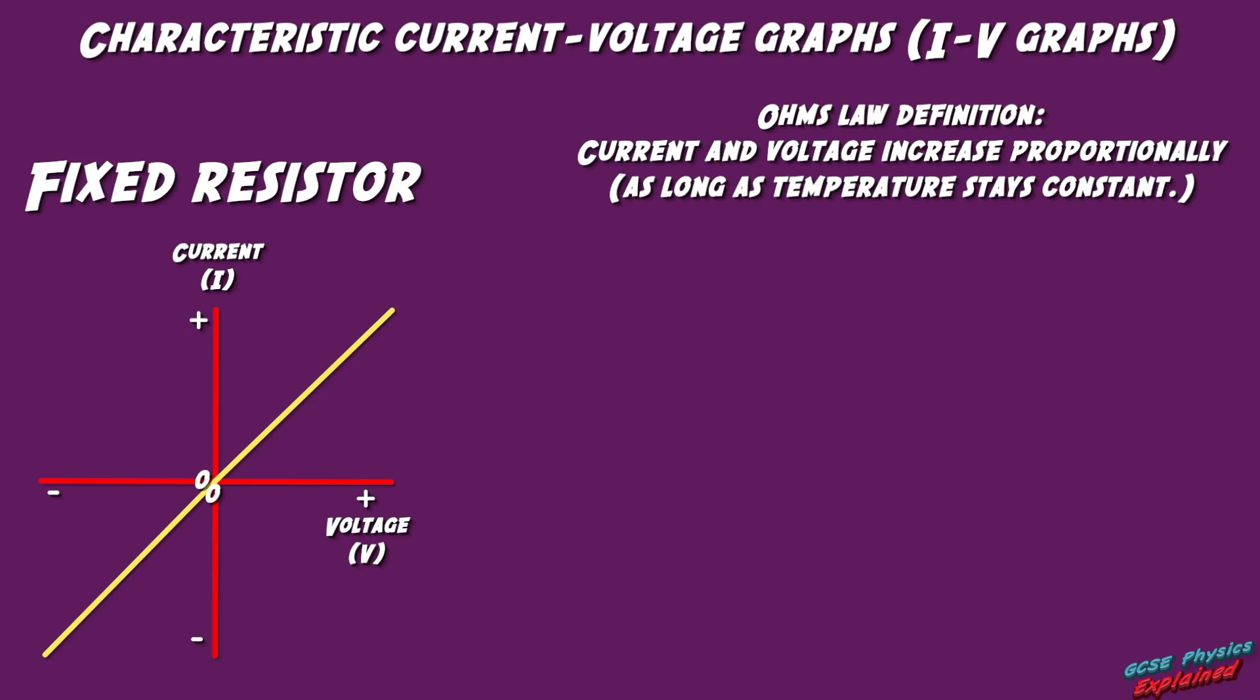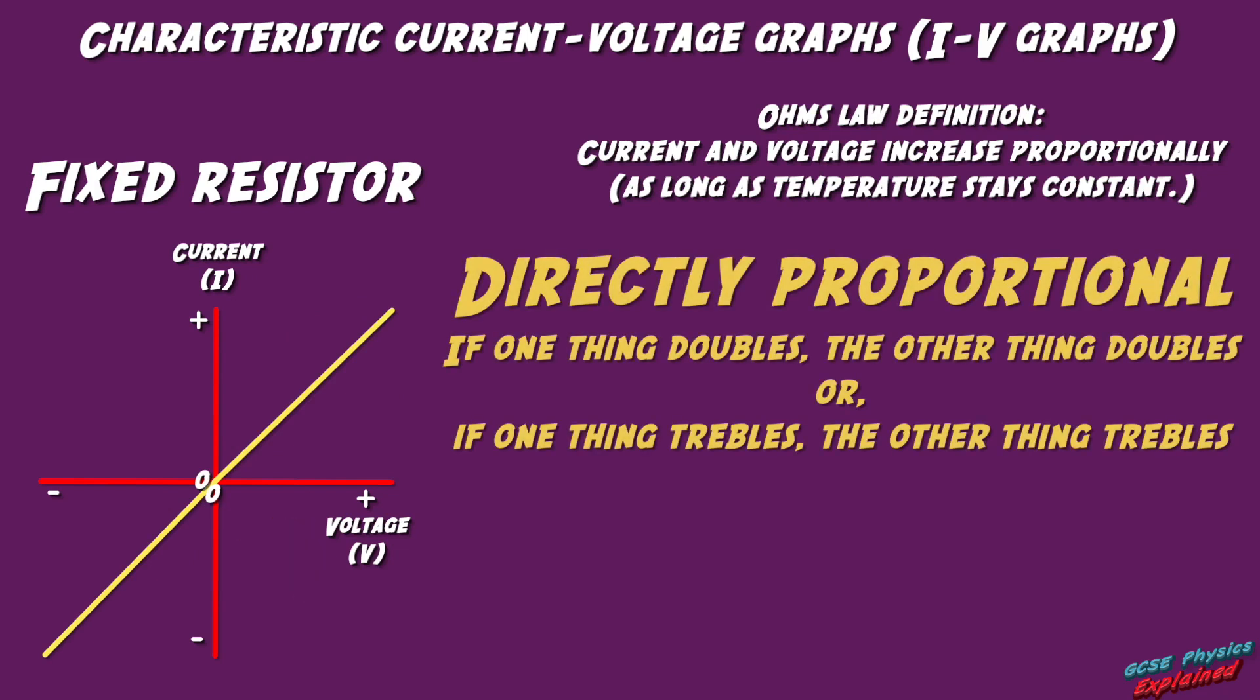We can tell the relationship between current and voltage is directly proportional because the graph is linear, which means a straight line, and goes through the origin.